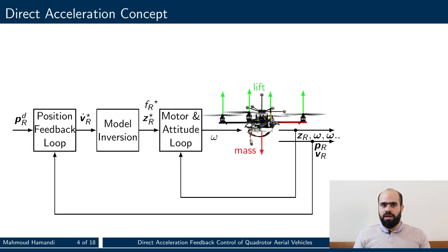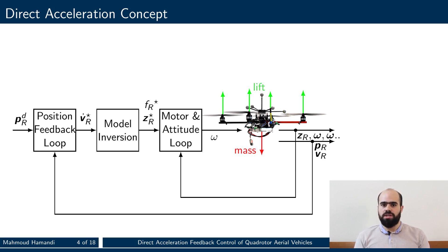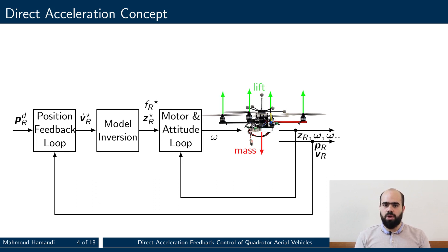In this slide, we show a classical quadrotor controller, where the position feedback loop finds the desired acceleration to reach the desired position and velocity. Desired thrust and platform direction are then calculated from the desired acceleration based on the nominal model. Finally, propeller speeds are calculated to achieve the desired thrust and direction.